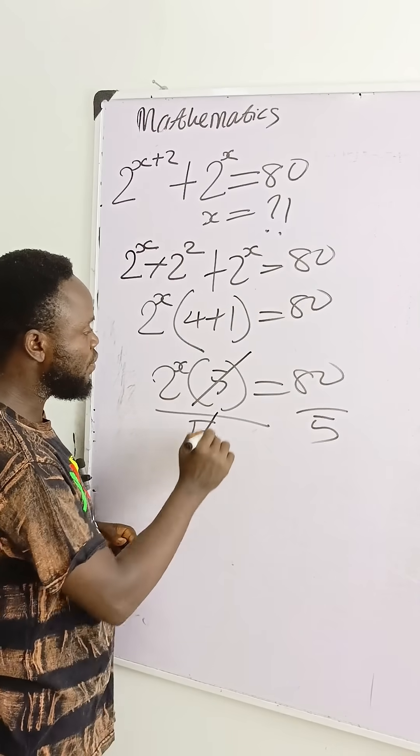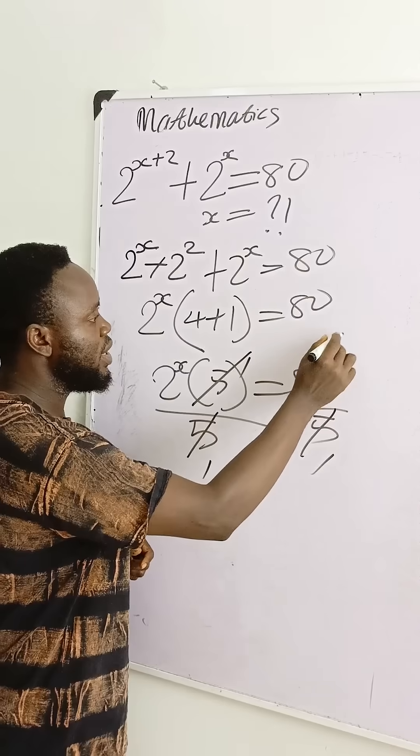Then this one will divide, you have 1. This one here have 1. This one here have 16.